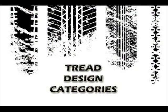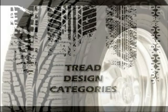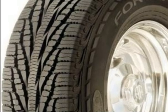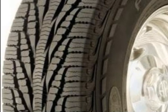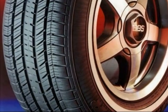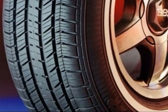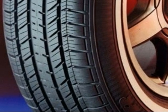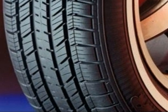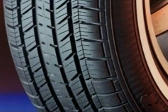Tread Design Categories. Directional tread design is optimized to work best when rotating in one direction only. Non-directional symmetrical tread design has the left and right portions of the tire as mirror images with no specific direction of rotation. Asymmetric tread design is where one half of the tire is not a mirror image of the other half.